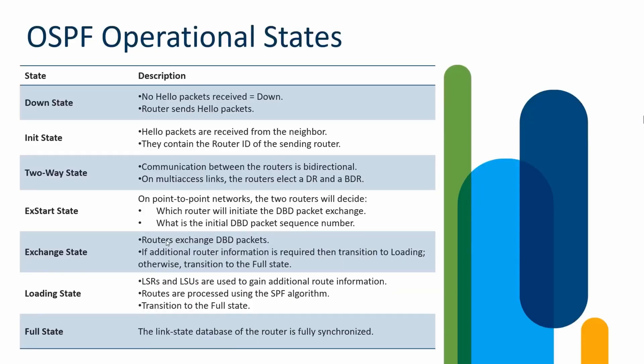We're here to discuss OSPF operational states, focusing on the progression OSPF takes from being activated on an interface to having multiple OSPF routers reach convergence. To complete this convergence, we have seven states: Down, Init, Two-Way, ExStart, Exchange, Loading, and Full. We'll walk through each of these states, so let's get started.